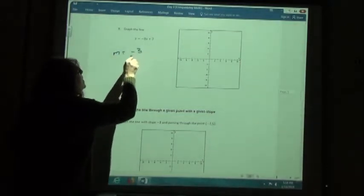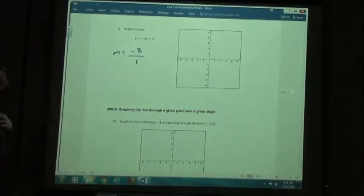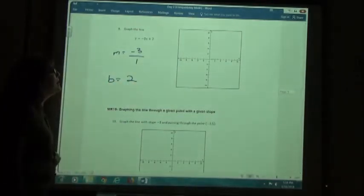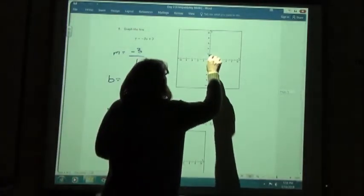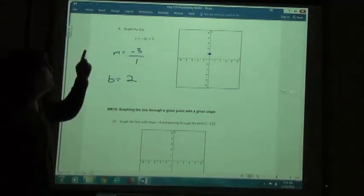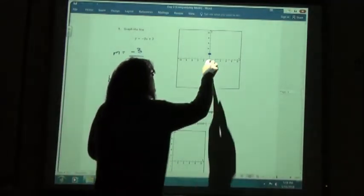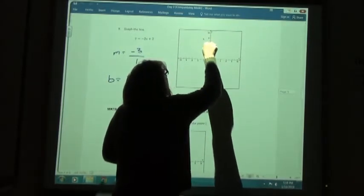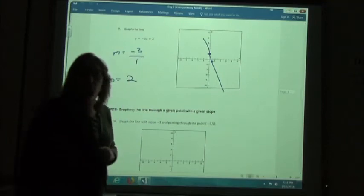my slope is going to be negative 3. Or as I'm going to write it, negative 3 over 1. My y-intercept, my b-value is a positive 2. So you marked positive 2 on your y-axis. I'm going to go down 3 and to the right 1. Down 1, 2, 3, to the right 1. I then have my line, if I could draw a straight line.